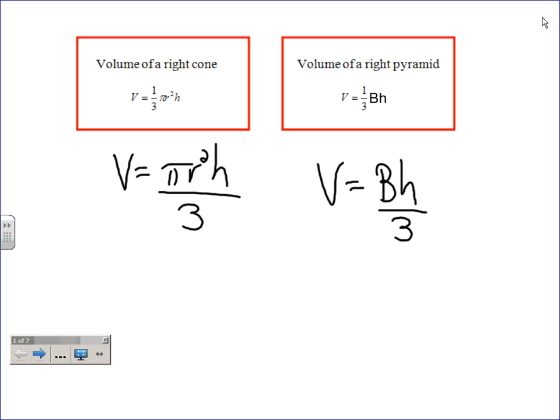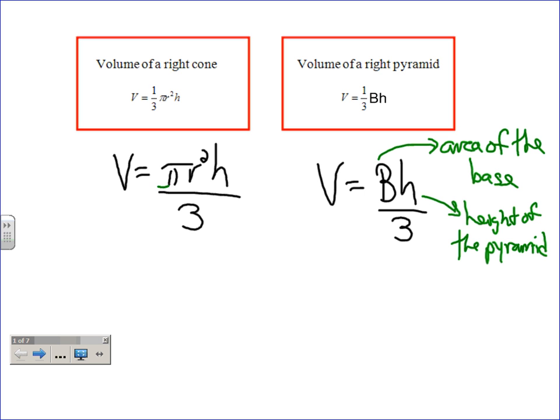And then for the right pyramid, it is the area of the base. Again, that's what the capital B stands for. And then h here is the height of the pyramid. Notice I didn't say slant height. I just said height, where when we did surface area we were using the slant height. Same thing over here. Here's the area of your base, and then here it's the height, again not slant height but actual height of the cone. And in both cases you will divide by three.